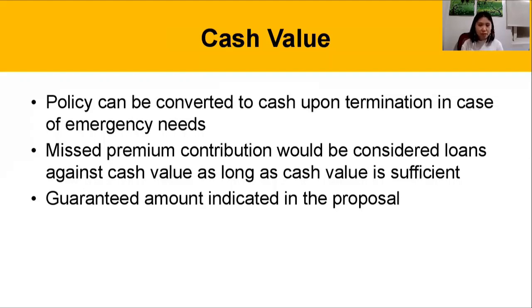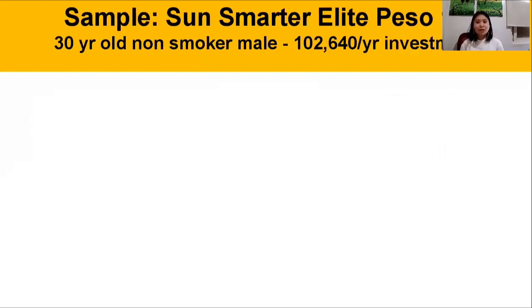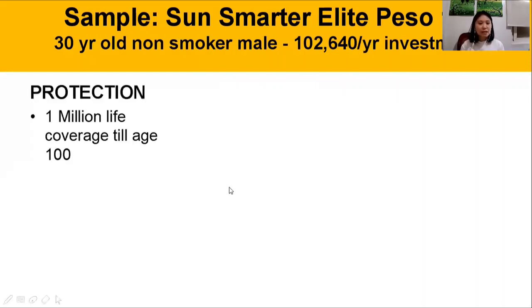These cash values are indicated in the proposal. They are guaranteed amounts and they change per year. In order for us to better imagine how it works, I created a sample endowment plan called SunSmarter Elite Peso 10. I computed it for a 30-year-old non-smoker male. If you were to invest around ₱100,000 per year, this is what you can possibly get.